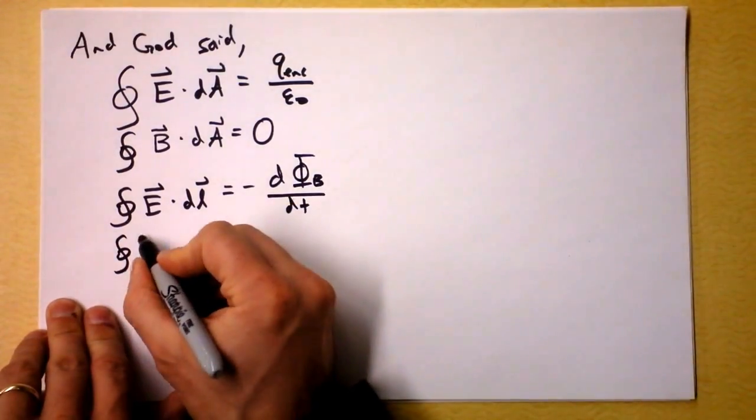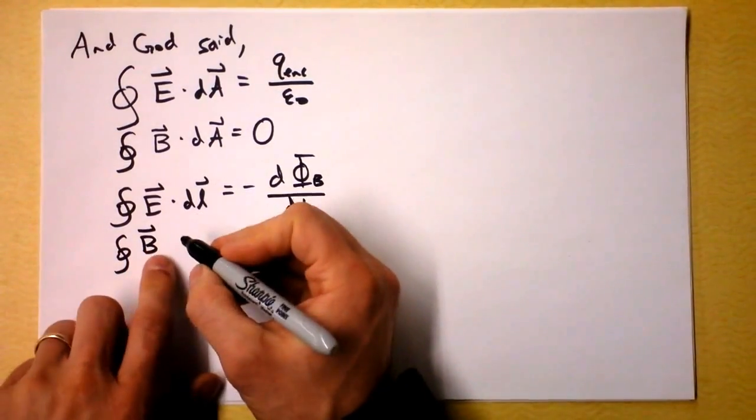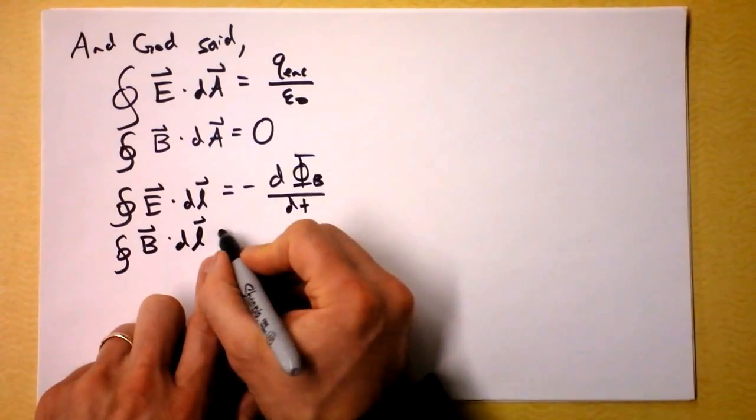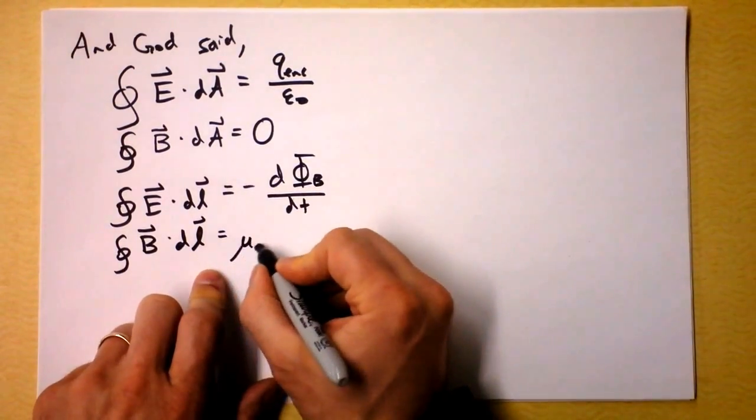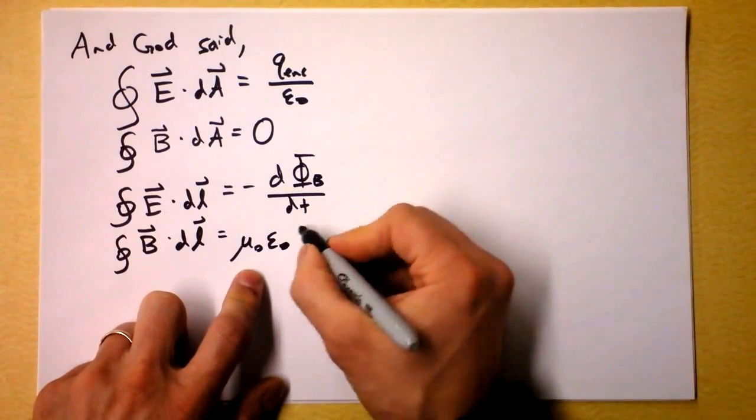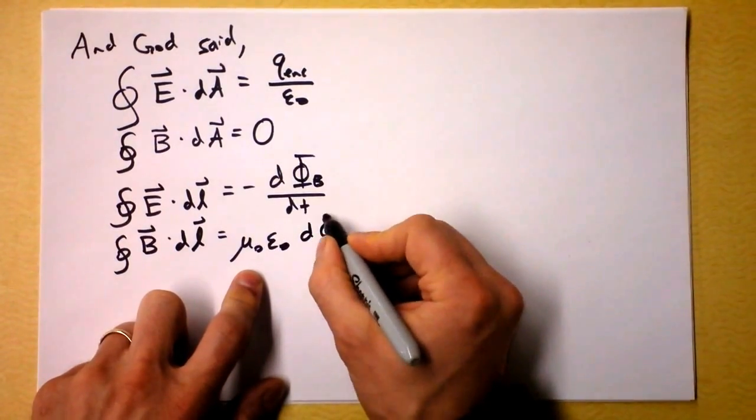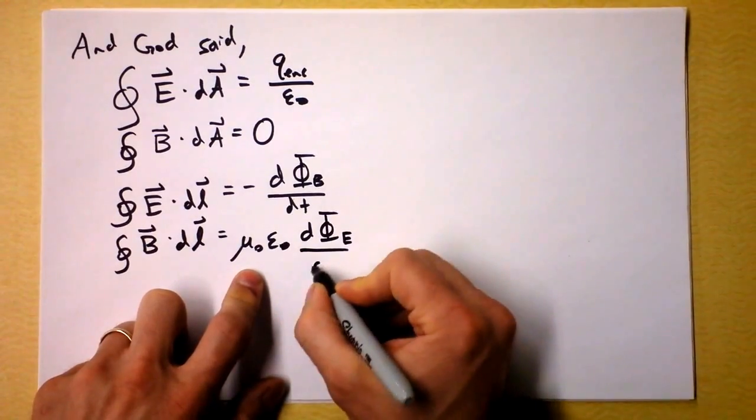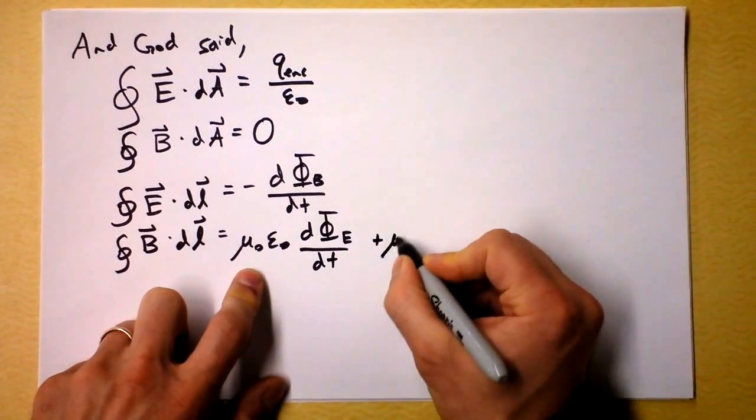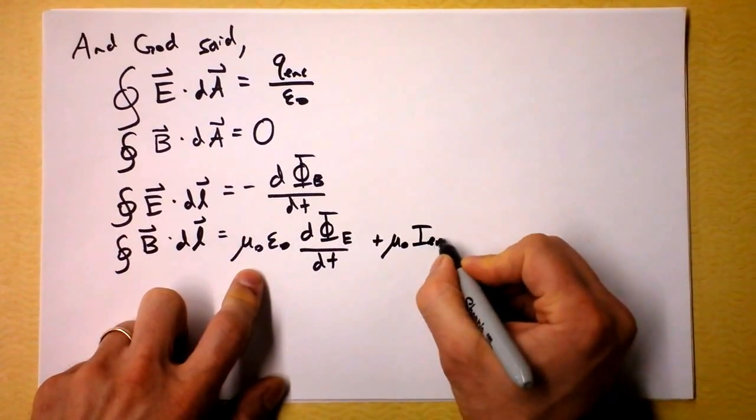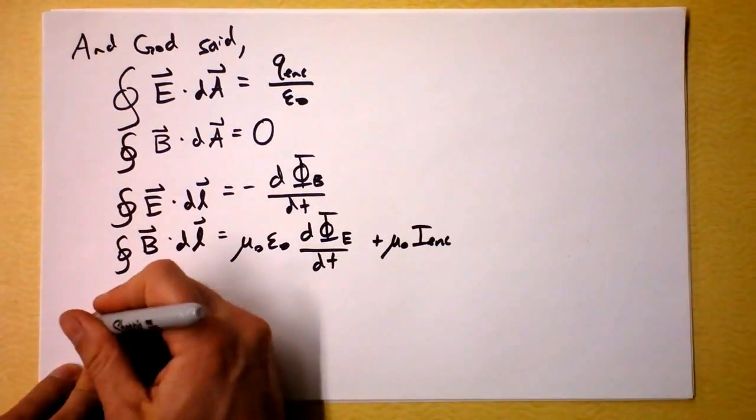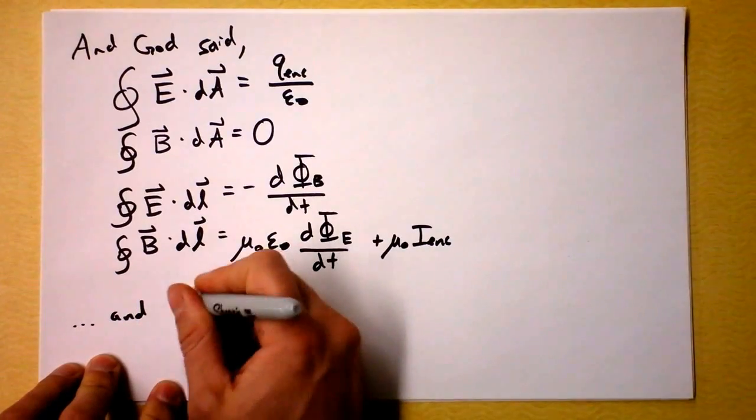And there's this other equation that says if you take the integral of the magnetic field dotted along some length as you're going along that length, then you get mu naught times epsilon naught times d phi electric over time plus mu naught times I enclosed. And my shirt says 'And God said' and then it says 'and there was light.'